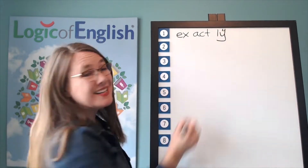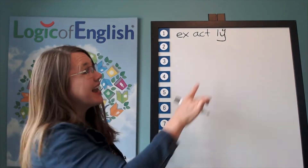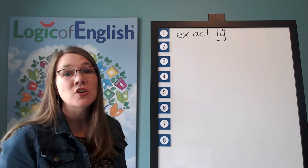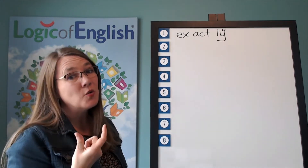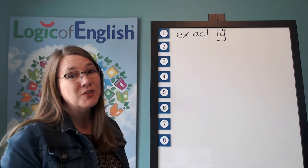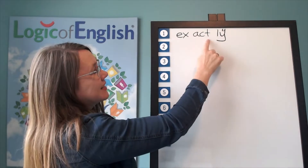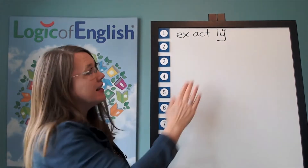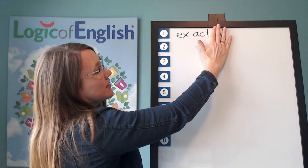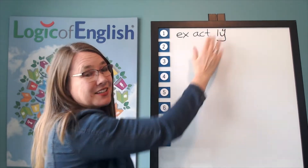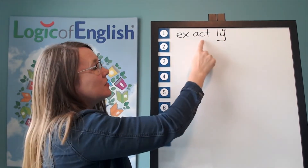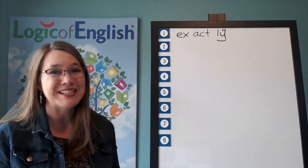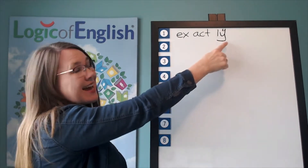Y-I-I-E said its fourth sound. And why did it do that? It's at the end of a multi-syllable base word. Do you see a small word in the middle of this word? Do you see the word exact or act? That's right. And you can also get the word exact. There's all sorts of pieces or morphemes coming together to make the word exactly.